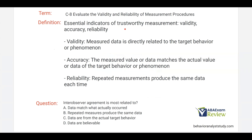Starting with the essential indicators of trustworthy measurement. These include validity, accuracy, and reliability. Data must be all three to be useful. Validity says the measured data is directly related to the target behavior, meaning your measurement is measuring what you intend to measure. If I'm measuring nail biting, then I'm actually measuring nail biting.